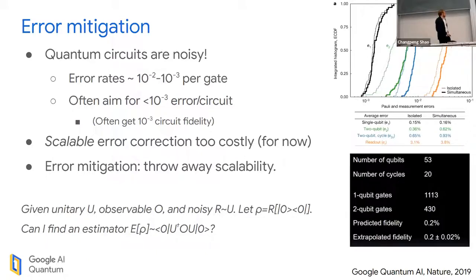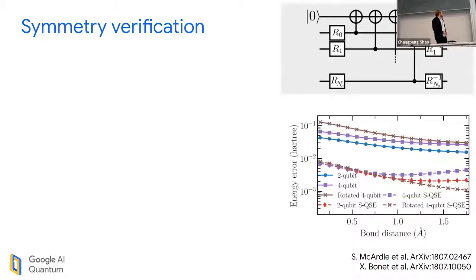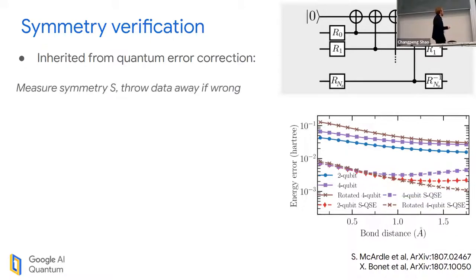One of the oldest forms of error mitigation, one of the simplest forms, and probably one of the dumbest forms, which is why we like it, is what we call symmetry verification. That name is due to Javier Bonet, the first author on our paper. Otherwise known as post-selection for people who aren't pretentious. It's inherited from quantum error correction.